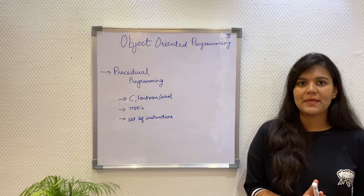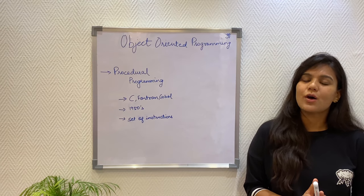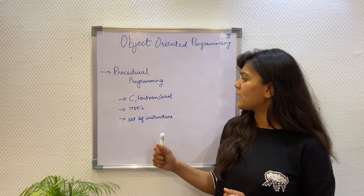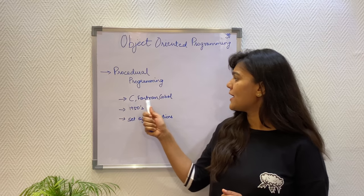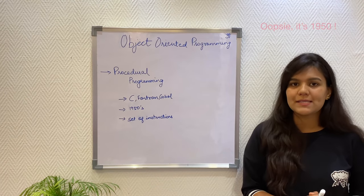The predecessor for object-oriented programming was the procedural programming. The procedural programming, as the name suggests, is all about writing functions, routines, or subroutines. The procedural programming was used by languages like C, Fortran, Cobol, etc. from as early as the 1960s.